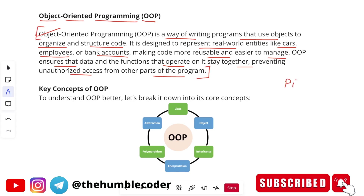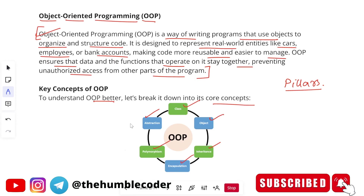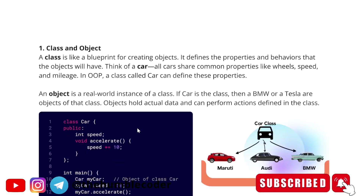Based on OOP, we have what are called the different pillars, features, or concepts of OOP — all are the same things. OOP is mainly based on classes and their objects. To understand OOP better, we will break it down into its core concepts: classes, objects, and then the four pillars — inheritance, encapsulation, polymorphism, and abstraction. We will see all of them one by one. Each of these is an individual interview question on its own.